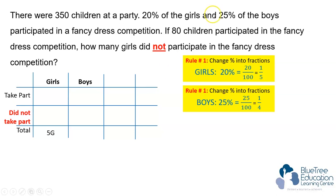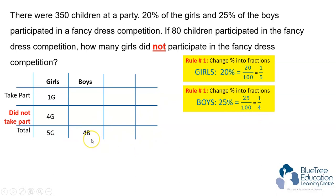Since the girls' percentage has been changed to one-fifth, the 5 at the denominator gives us a hint that there are 5G units of girls. That means 1G participated in the competition and 4G did not. The fraction for boys gives us a hint that it starts with 4B — 1B participated and 3B did not.